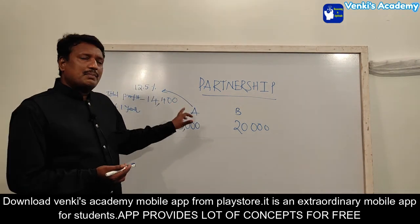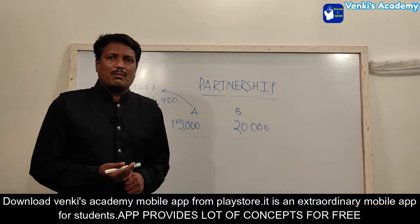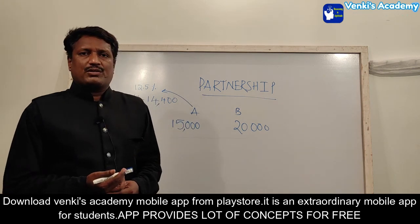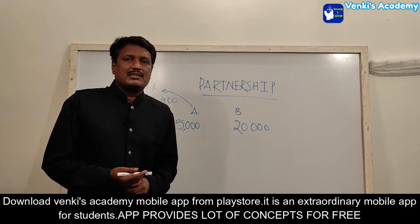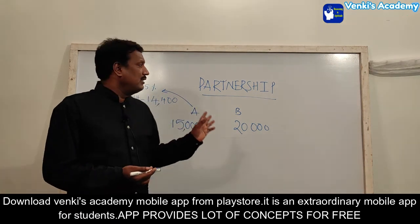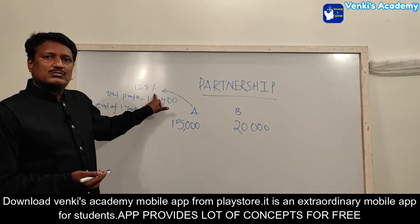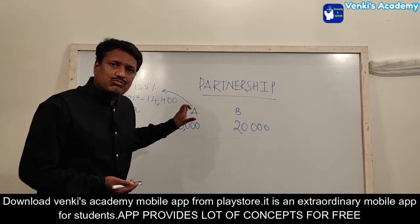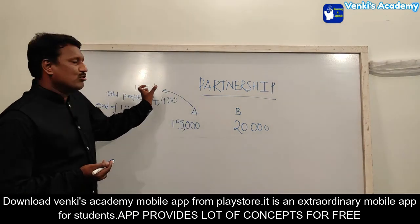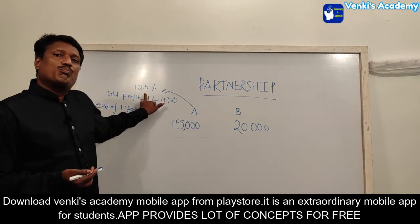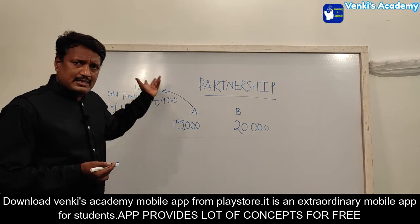The active partner, who takes extra risk, first receives their commission from the total profit — 100% profit first. For example, 12.5% is given as extra commission to the active partner for managing the business. This is a stress amount, a personal order for the active partner.